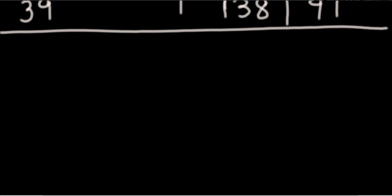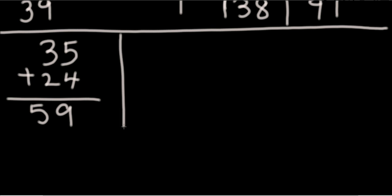Let's take another example: 35 plus 24. 30, 50, 55, 59. See, now you will see that you're getting fast.